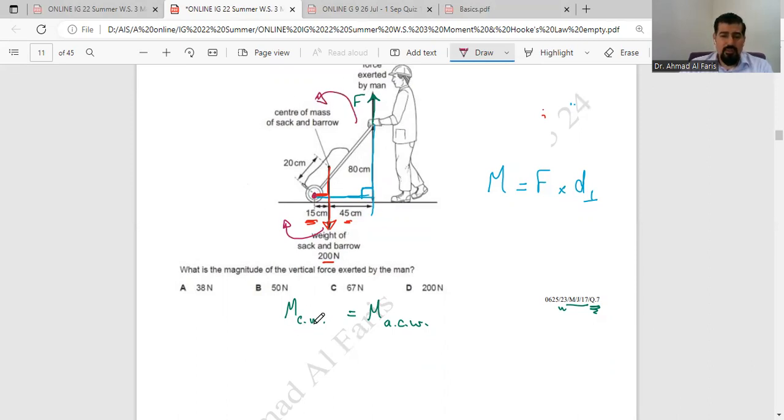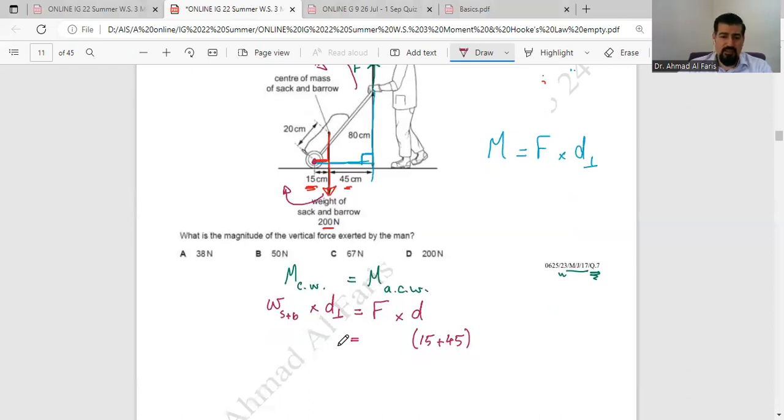So the moment clockwise, which is the weight of the sack and the barrow, multiplied by the perpendicular distance, which is the 15 centimeter, equals the force acted by the man, multiplied by the perpendicular distance, which is 45 plus 15. So here we have 15 plus 45, which is 60 centimeter. It doesn't matter to convert it into meters, so we keep it in centimeters. Both of these are in centimeters, it's okay.